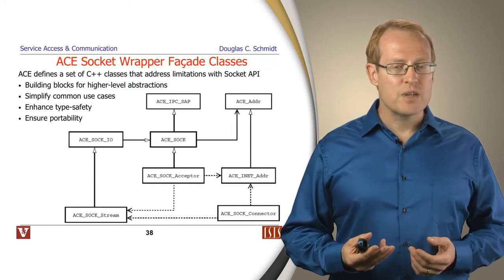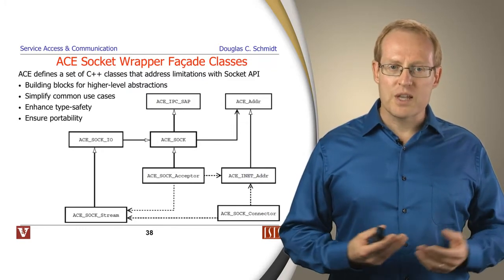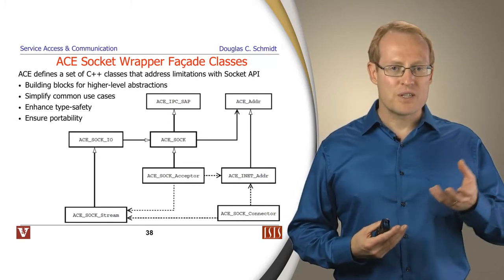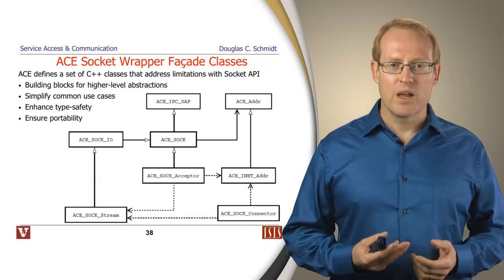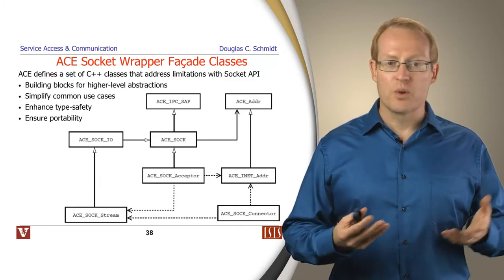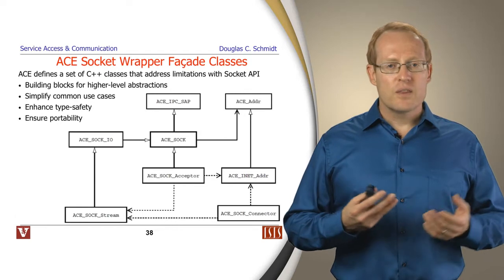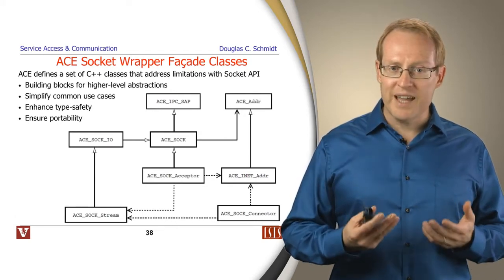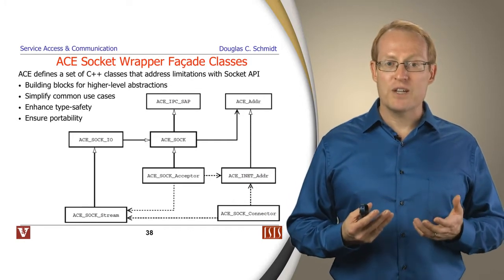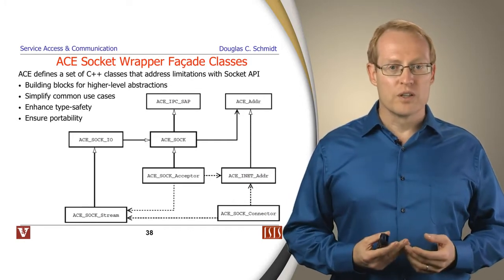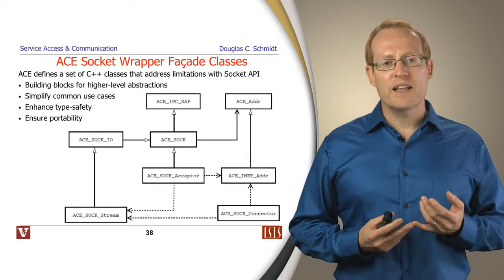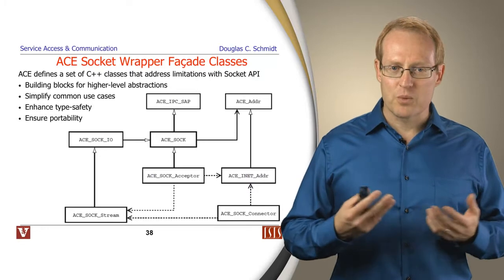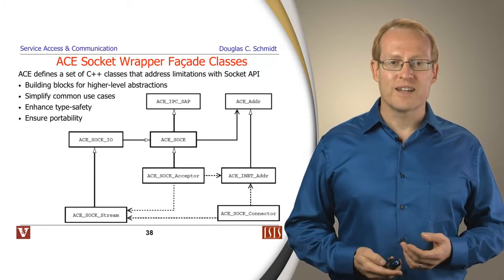You can also simplify common use cases. If you take a look at the normal socket interface, there's a number of different functions that have to be called in order to set up a socket in passive mode or active mode. We can do those things in one fell swoop with a single call by using abstraction. The wrapper facades that ACE provides are also more type safe. You just can't do certain kinds of error-prone operations that you might do with the low-level C interfaces. We can also provide portability to many different operating systems, whereas before we'd have to wrestle with those types of issues in each of our applications one at a time.